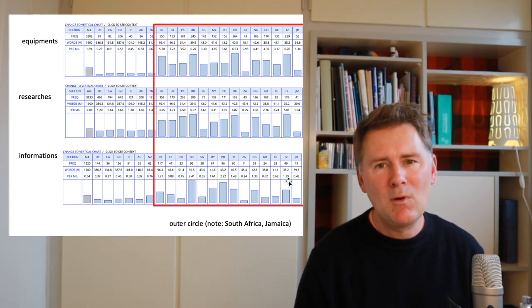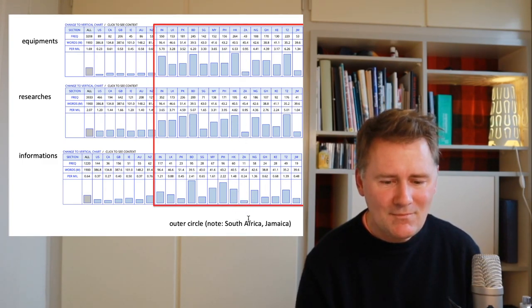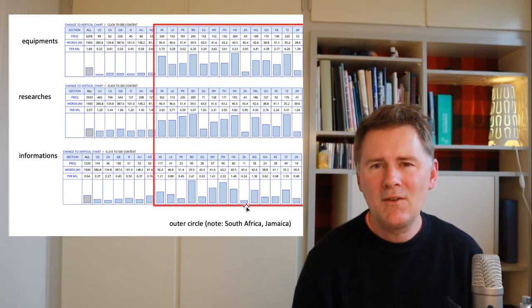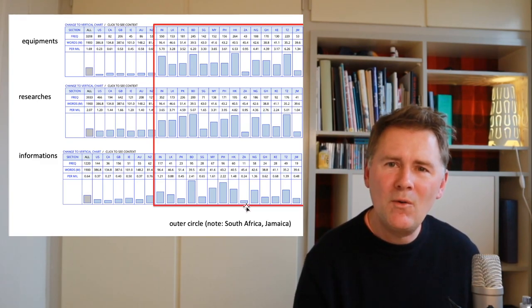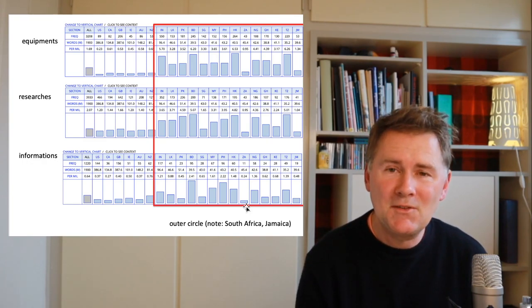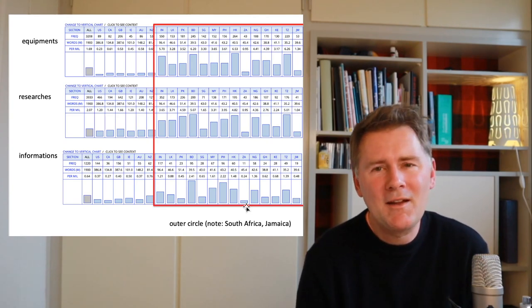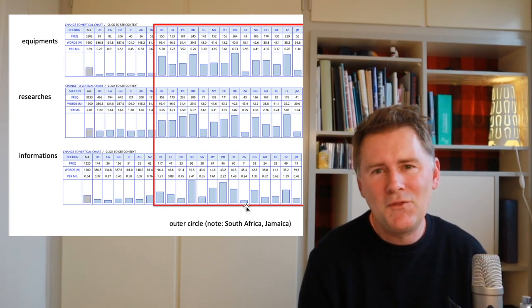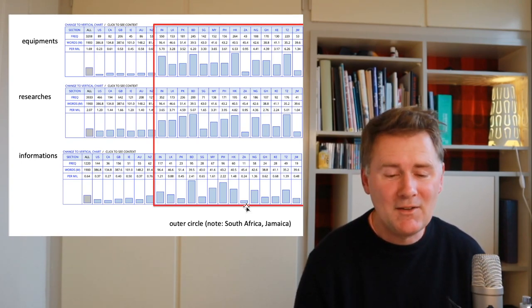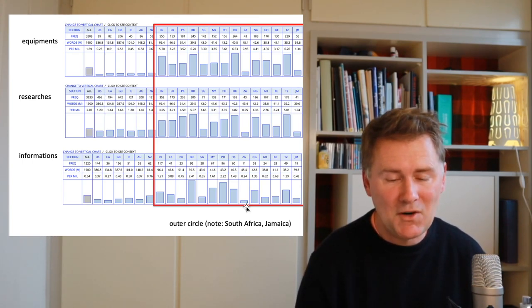One thing worth mentioning is that when you look at South Africa and Jamaica, you see that those varieties don't really pattern along with the other outer circle varieties. There are reasons for that — if you are onto the reasons, let me know in the comments. Otherwise, I'll let you figure out why South African English or Jamaican English might be patterning a little differently than other outer circle varieties.